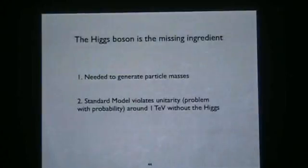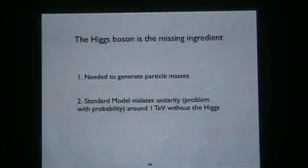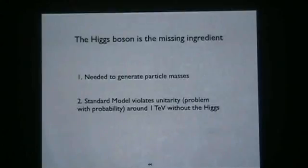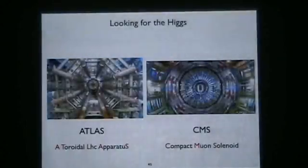I left off something very important: the Higgs boson. All these standard model particles are fundamentally massless without it. The Higgs boson couples to all the quarks and gives them mass. It couples to the W and Z bosons and gives them mass, turning what would be a long-range force into the short-range weak nuclear force. The only massless particles are the photon, mediating electromagnetism, and the gluons mediating the strong force. The standard model also has problems with probability without the Higgs: scattering experiments give probabilities larger than one around a tera-electron-volt, which makes no sense. This is the energy scale being probed by the LHC — what it was built to find.